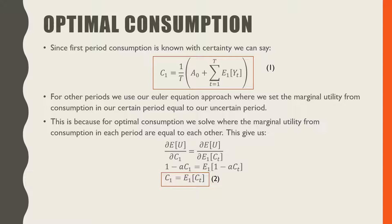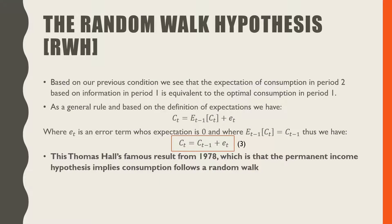This is a very general statement, similar to the case of consumption under certainty. Based on our previous condition, the expectation of consumption in period 2 based on the information in period 1 is equivalent to optimal consumption in period 1. As a general rule and based on the definition of expectations, consumption in period t equals the expectation based on information in period t minus 1 of consumption in period t, plus et, where et is the error term with an expectation of 0. And the expectation of consumption in period t based on information in period t minus 1 equals consumption in period t minus 1.